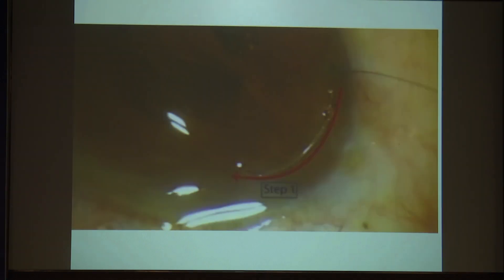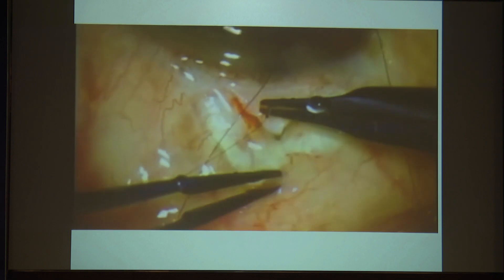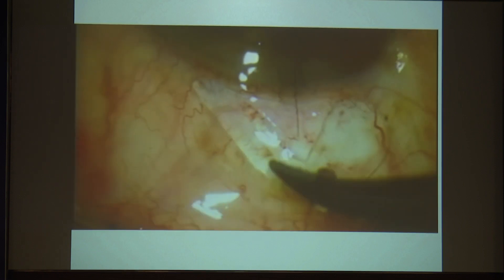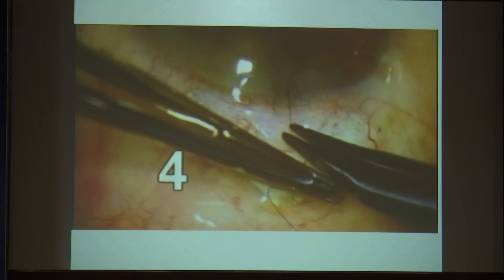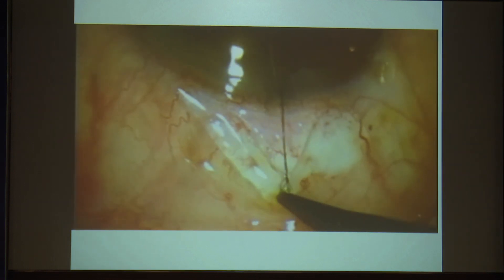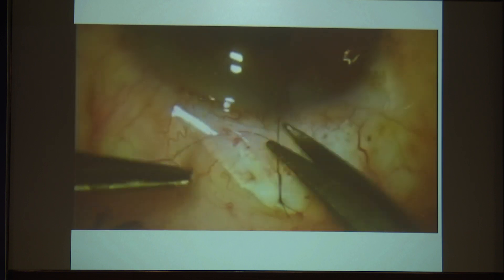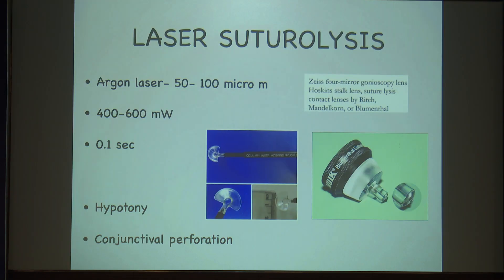The next option is a releasable suture. There are three steps: first, a corneal bite parallel to the limbus; second, a perpendicular bite in the cornea; then go and do the flap apex closure. Put four throws and tighten it. You can tighten it really tight so that in the post-operative period, if the IOP is getting high, you can just remove it. After closing, you cut both ends. This is a releasable suture.